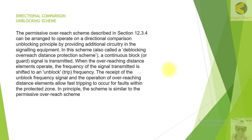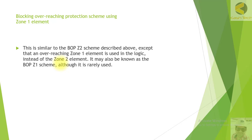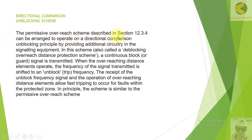Now let's look at the unblocking scheme — the permissive overreach scheme can be arranged to operate on the directional comparison unblocking principle by providing additional circuitry in the signaling equipment. Also called the directional comparison unblocking overreaching distance protection scheme, a continuous block or guard signal is transmitted. When the overreaching distance element operates, the frequency shifts to an unblocked frequency, allowing fast tripping for faults within the protected zone.